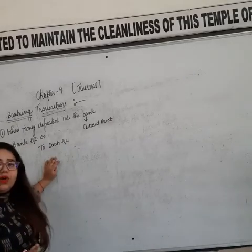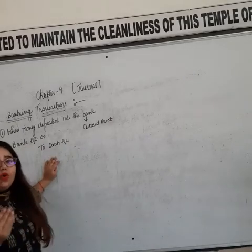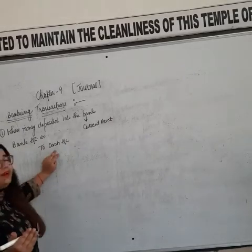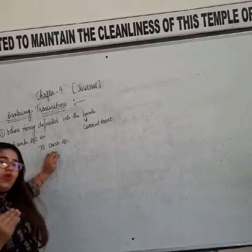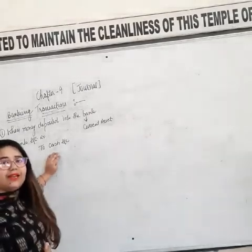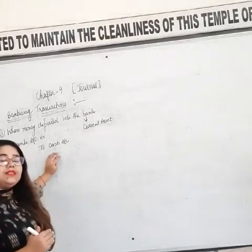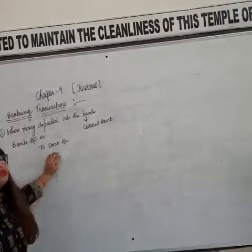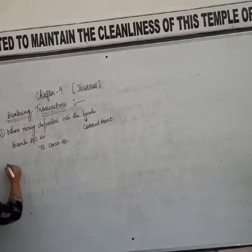According to the real account rule, what goes out is credited. So, when cash is going out, that is why it is credited, and bank finances are increasing, that is why it is debited.